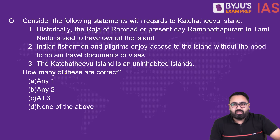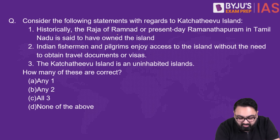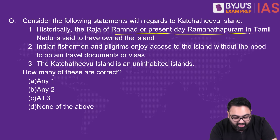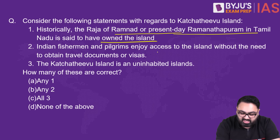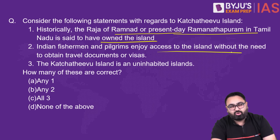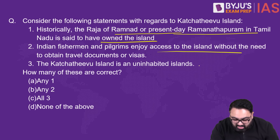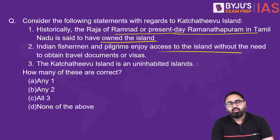Consider the following statements about the Kachatibu Islands, which were in the news. One: historically, the Raja of Ramnad (present-day Ramanathapuram, Tamil Nadu) is said to have owned the island. Two: Indian fishermen and pilgrims enjoy access to the island without needing travel documents or a visa. Three: the Kachatibu Island is an uninhabited island. How many are correct? Take a few seconds.